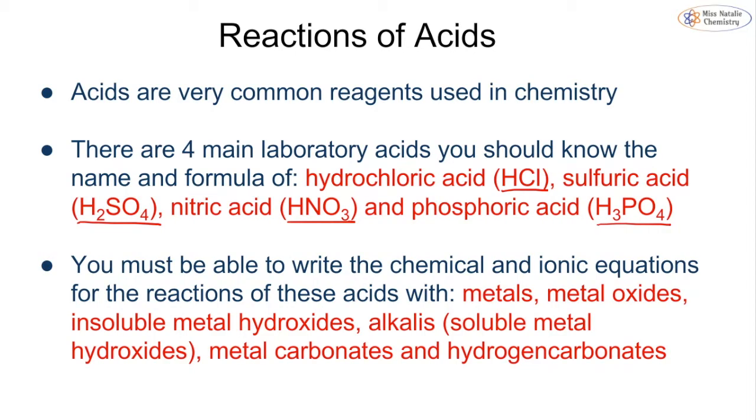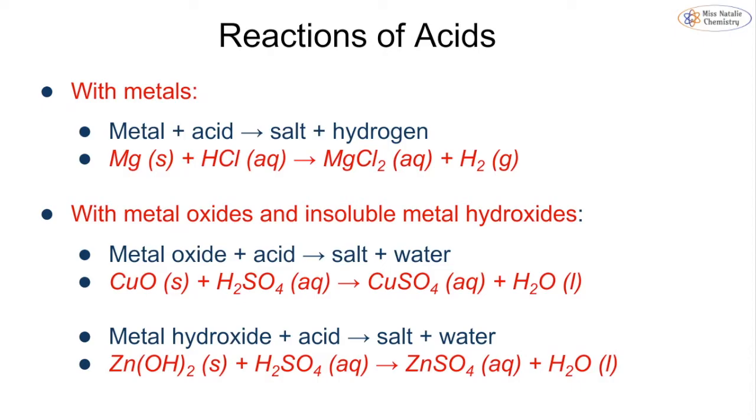If we react an acid with a metal, we make a salt plus hydrogen gas. For example, magnesium added to hydrochloric acid makes magnesium chloride and hydrogen gas. We can test for this because it burns with a squeaky pop.